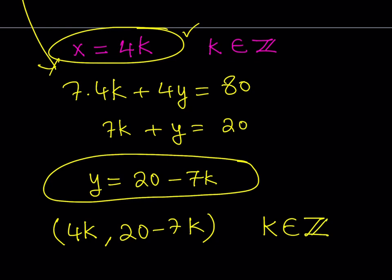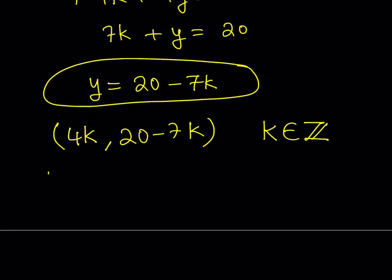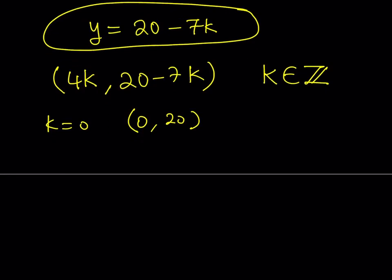What this tells you is I have this ordered pair for x, y: (4k, 20 - 7k), and k is an integer. Basically, I can replace k with any integer value, and I should be getting a solution as an ordered pair. For example, if k = 0, I'll be getting (0, 20). Is this a solution of the original equation? Yes. Is that a solution of the system? Of course it is. But here's the thing: we only found x and y, but there's a z in the equation. How do you solve for z?